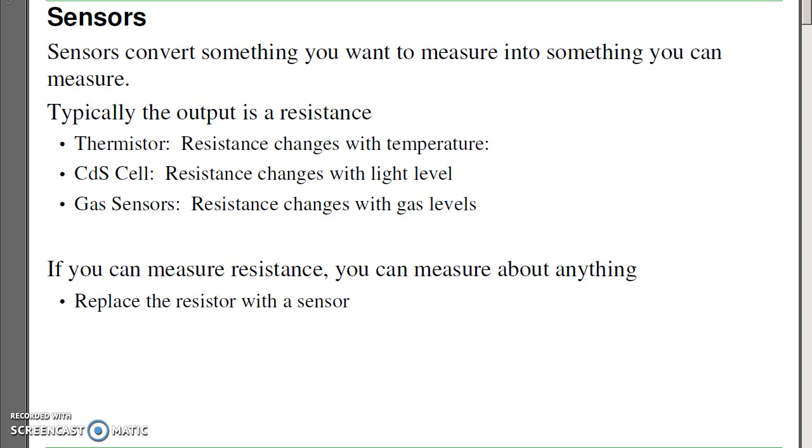Typically, the output of a sensor is resistance, although it can be voltage, current, capacitance, various outputs like that. Resistance is typically an output because it takes no energy to form a resistance. Likewise, I don't need any batteries if I have a sensor where the output is resistance.